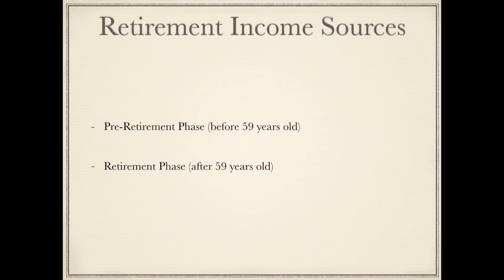First, we have the pre-retirement phase, which is before 59 years old. During this phase, withdrawing from one of the retirement accounts can help ease the transition into full retirement. Next, we have the retirement phase, which is after 59 years old, and this is where the other retirement accounts can be used. Keeping the withdrawal rate at 4% or below annually can help sustain your income for longevity. Planning a strategy across different types of retirement accounts should be used to maximize your returns.